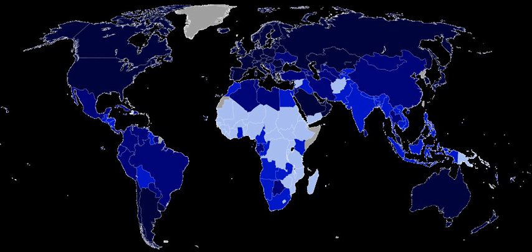The 2014 Human Development Report by the United Nations Development Programme was released on 24 July 2014 and calculates HDI values based on estimates for 2013. Some countries were not included for various reasons, primarily due to the lack of necessary data. United Nations member states not included in the 2014 report include North Korea, Marshall Islands, Monaco, Nauru, San Marino, Somalia, South Sudan, Sudan, and Tuvalu.